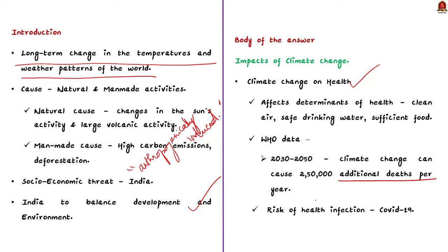Climate change will affect the social and environmental determinants of health like clean air, safe drinking water, sufficient food, and secure shelter. It also increases the risk of health infections like zoonotic diseases — for example, COVID-19. Due to all these reasons, climate change will pose a huge risk to the health architecture of developing countries like India.